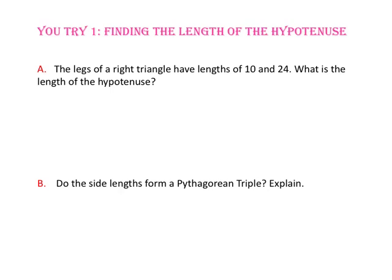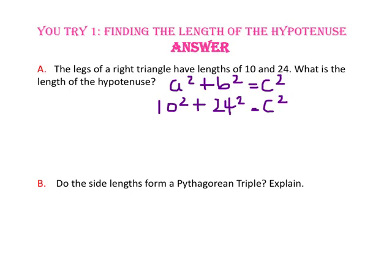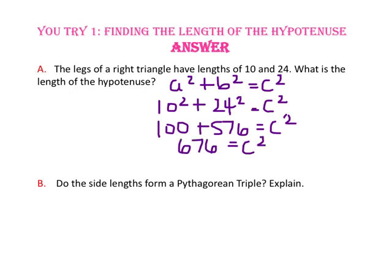Pause the video and do you try number 1. In part A, the legs of a right triangle have lengths of 10 and 24. What is the length of the hypotenuse? Let's start with the Pythagorean Theorem: a squared plus b squared equals c squared. Since 10 and 24 are the lengths of the legs, we will substitute 10 for a and 24 for b. 10 squared is 100 and 24 squared is 576, so 676 equals c squared. Take the square root of both sides; the square root of 676 equals c, which is 26. The length of the hypotenuse is 26 units.